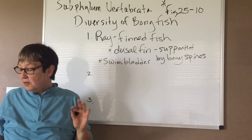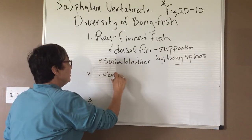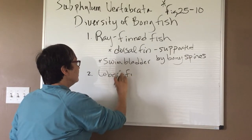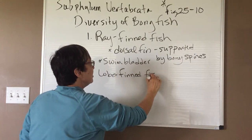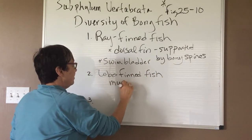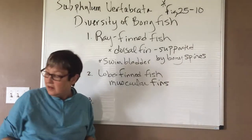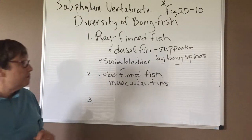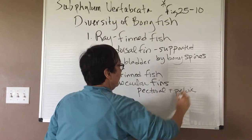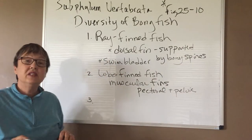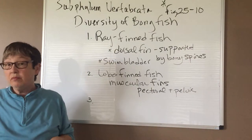The other two groups are smaller groups — by far, the ray-finned fish is the largest. The next group is called the lobe-finned fish. These have muscular pectoral and pelvic fins. They might have lived in shallow water and used those fins to maybe move from puddle to puddle, so to speak.